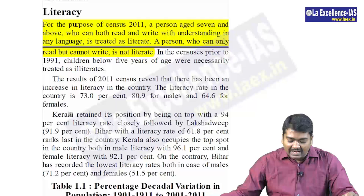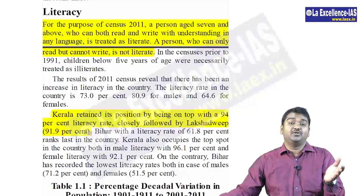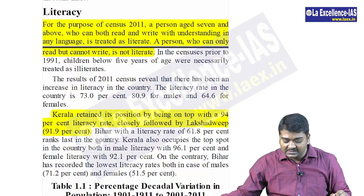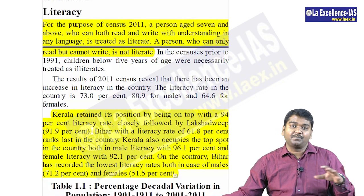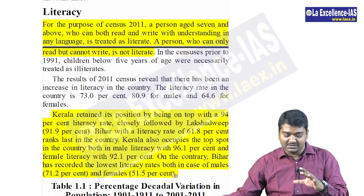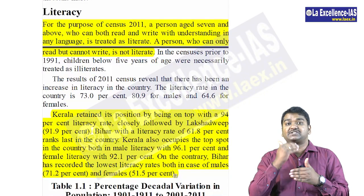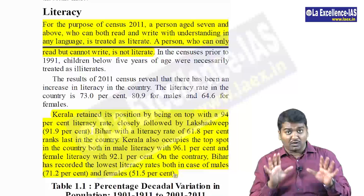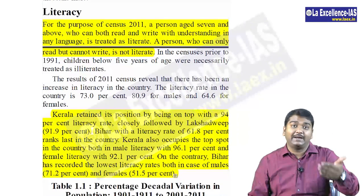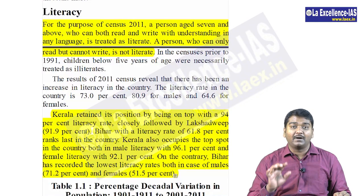Kerala retained its first position in literacy, followed by Lakshadweep — not Delhi, it is Lakshadweep for union territories. Bihar is last. Kerala tops both male and female literacy and Bihar is lowest in both. So which state is first, which is last, and which union territory is first — these are all important factual points to remember.